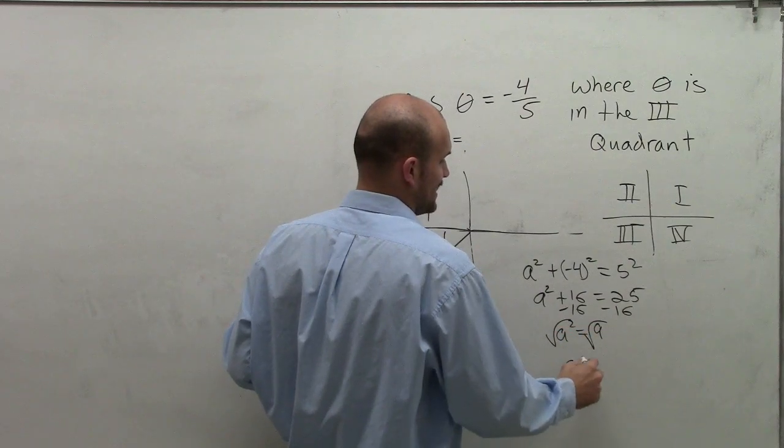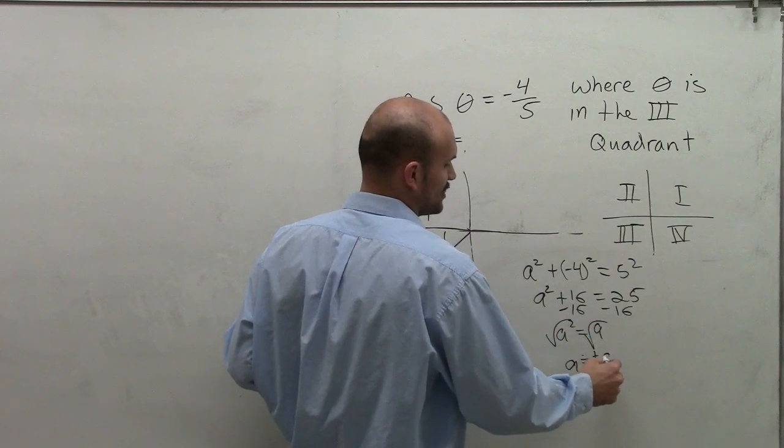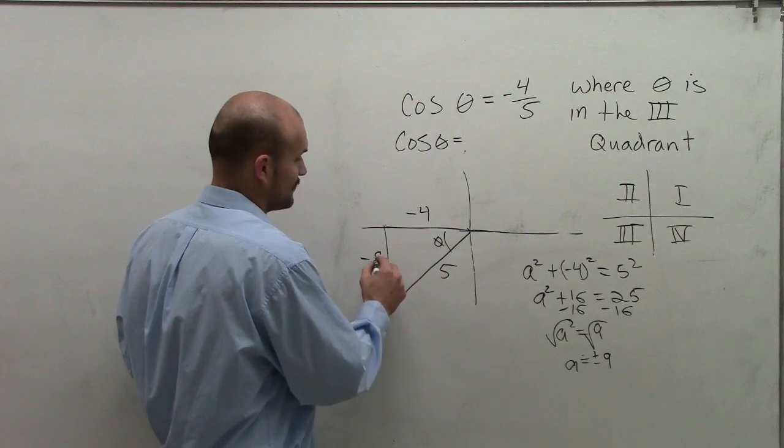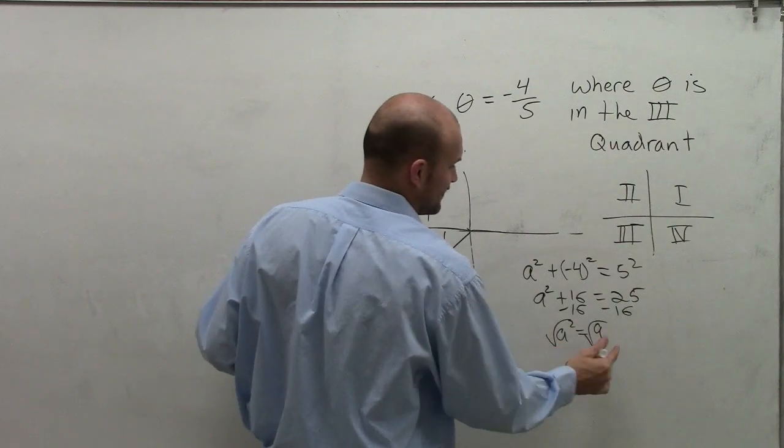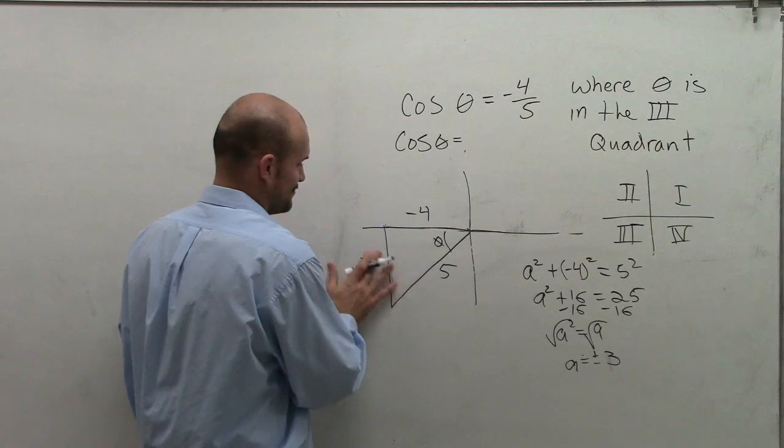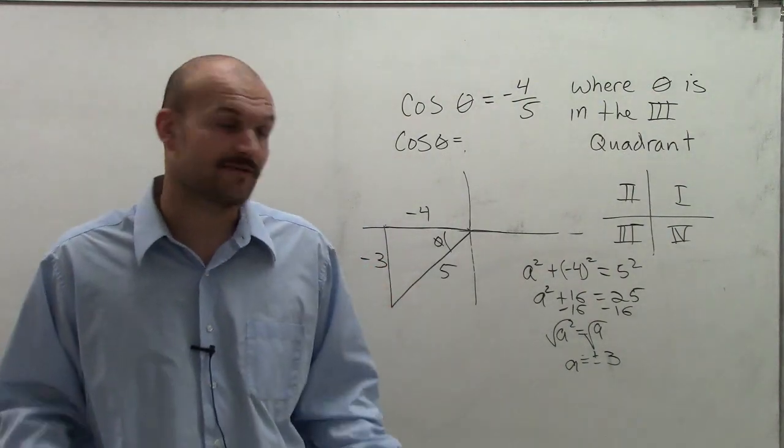Subtract 16, and I get a squared equals 9. Square root, a equals—now remember we'd always say plus or minus 9, and in this case, our y—I'm sorry, plus or minus 3. I guess we'll start off this video by making some mistakes. So therefore, we're going to have negative 3.